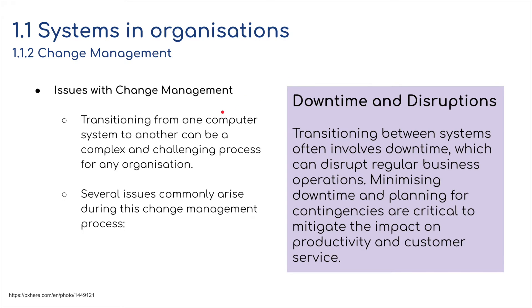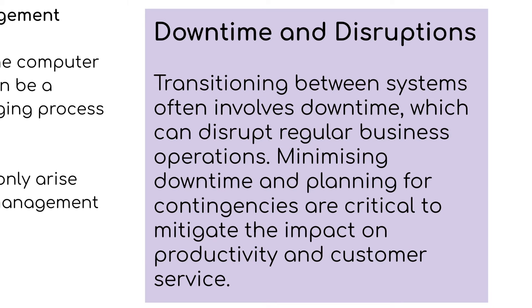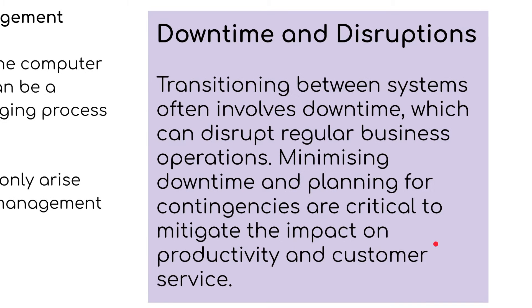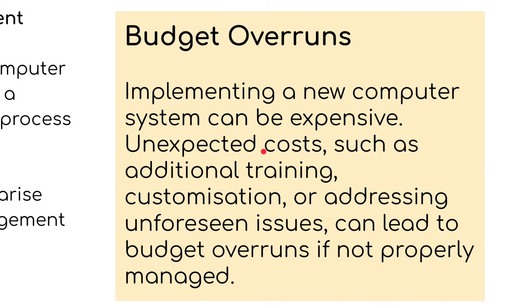There's obviously going to be some downtime when switching from one computer system to another, and this will cause disruption. Transitioning between systems often involves downtime which can disrupt regular business operations. Some people may need to come in at weekends or during non-business hours to handle the migration. Minimizing downtime and planning for contingencies are critical to mitigate the impact on productivity and customer service — especially if customers rely on you 24/7. Budget overruns are also a concern: implementing a new computer system can be very expensive, and unexpected costs such as additional training, customization, or addressing unforeseen issues can lead to budget overruns if not properly managed.